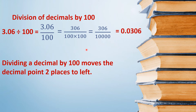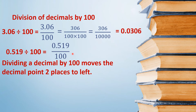तो इसी property का use करके हम direct भी कर सकते हैं. 0.519 को 100 से divide करना है. यहाँ three decimal places हैं, यानि आपके answer में decimal two places move हो जाएगा, और तीन से पाँच decimal places बन जाएंगे. दो zeros आगे आ जाएंगे और decimal यहाँ move हो जाएगा: 0.00519.